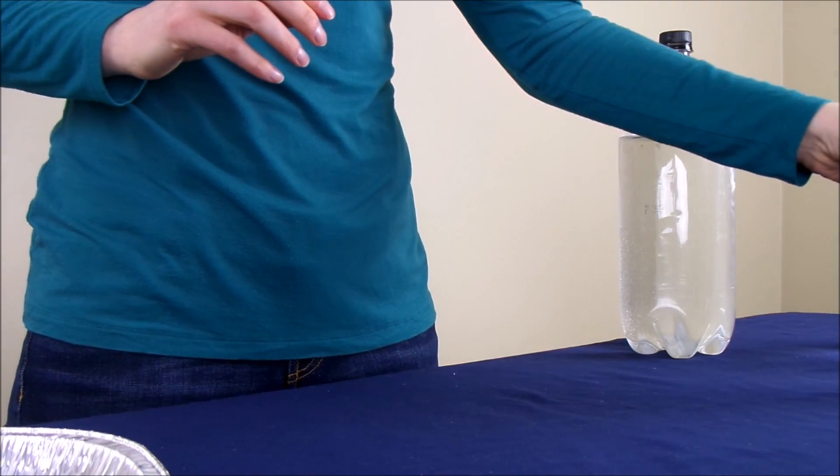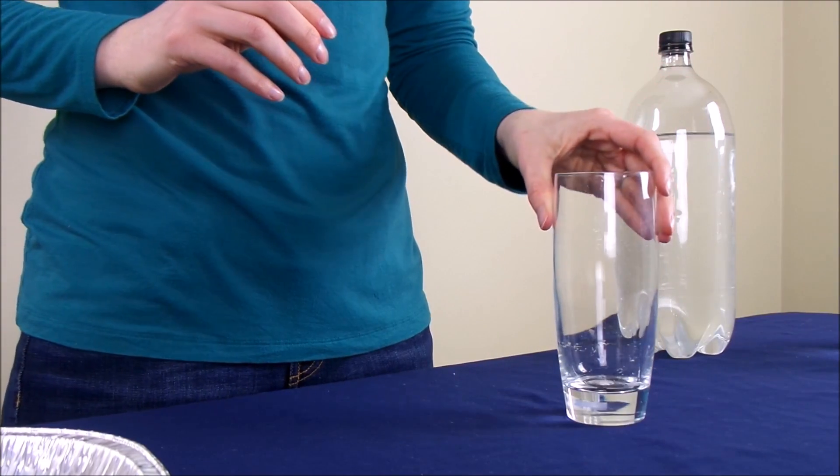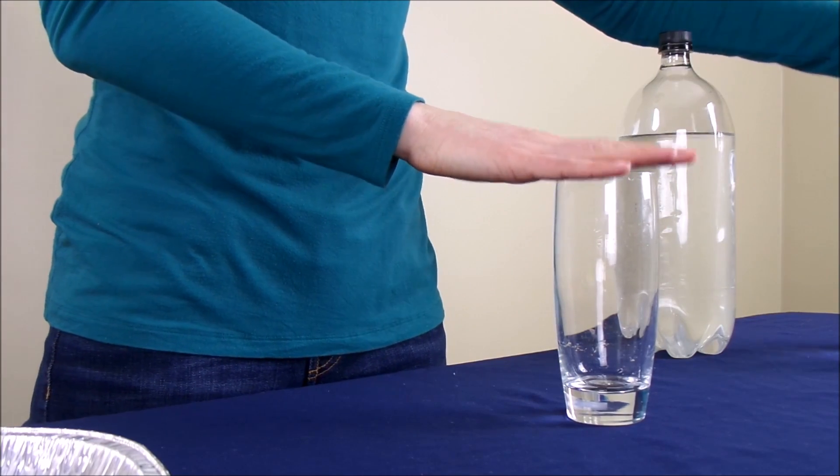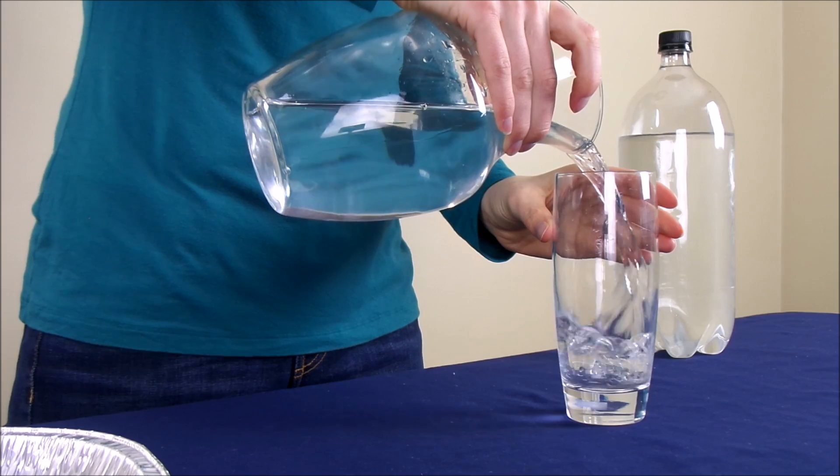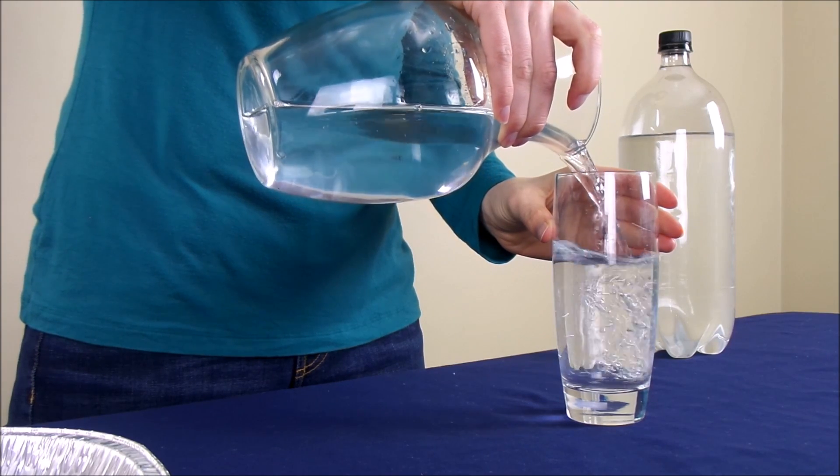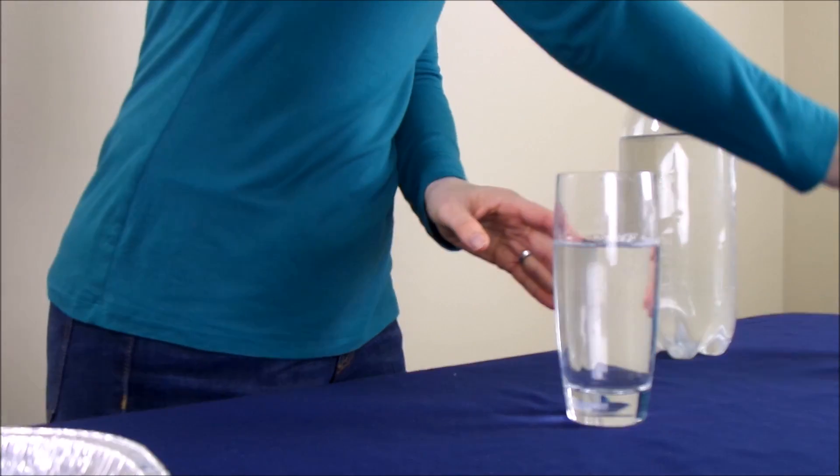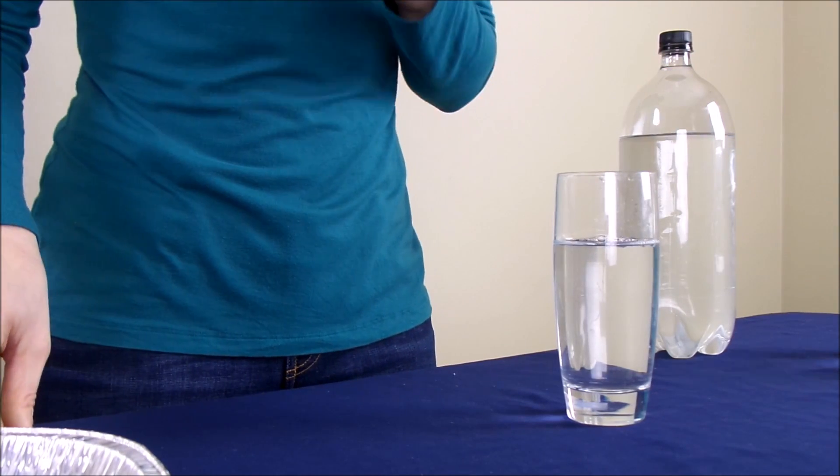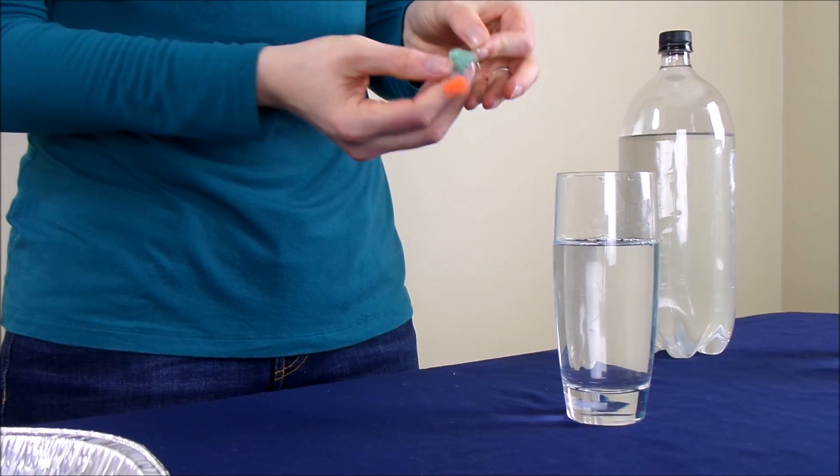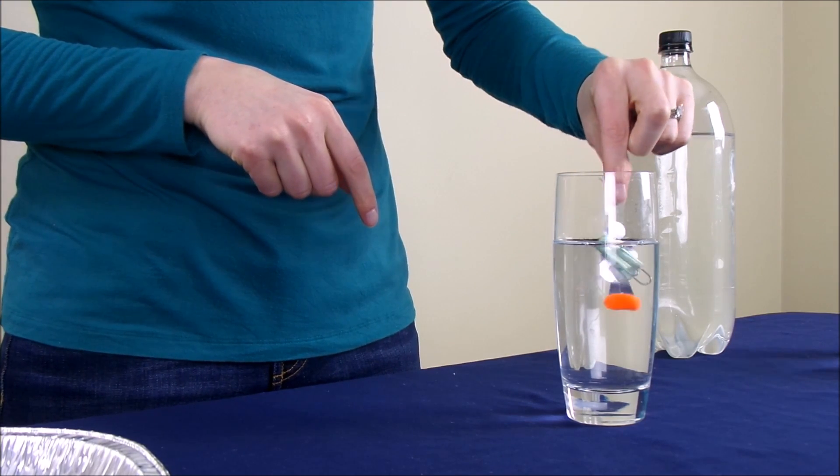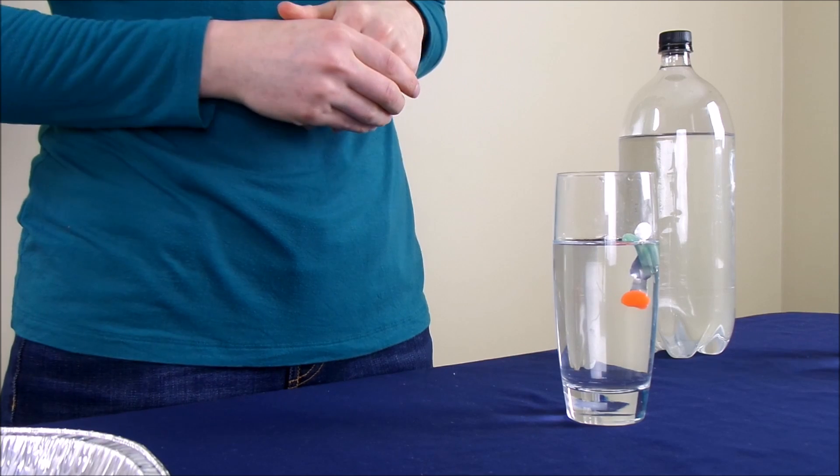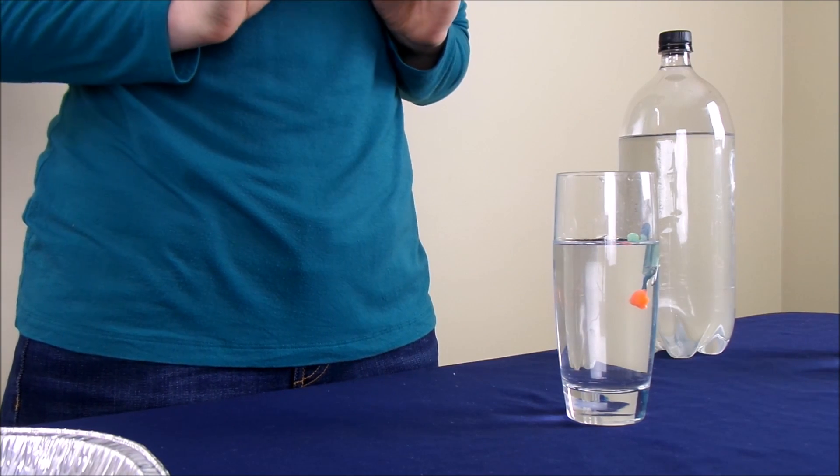Now we're going to test our diver. To do that, you're going to need an empty drinking glass and some water. I'm going to fill the drinking glass about three quarters of the way with water. Then I'm going to take the diver and put him into the glass feet first. You'll notice that he floats. That's what you want him to do.